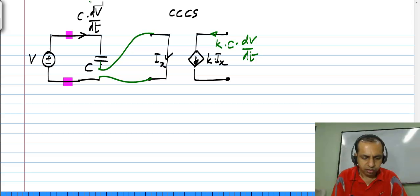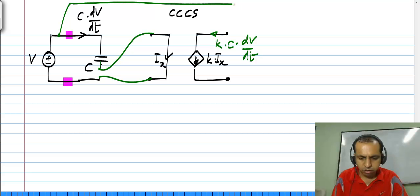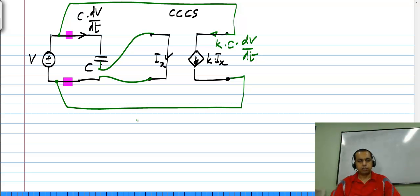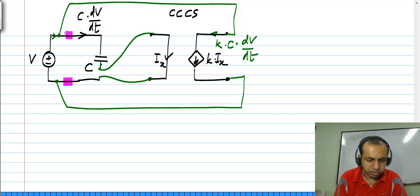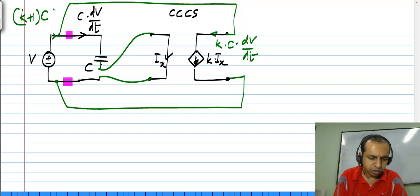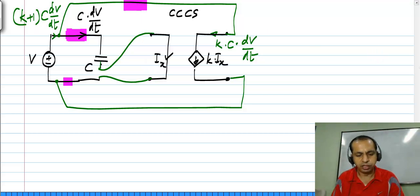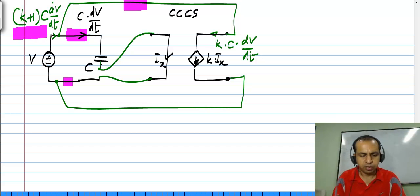Let me take the controlled current and also connect it across the voltage source which is driving the capacitor. Clearly you will see that the current drawn from the voltage source will be (K+1) times C times dV/dT. We have C·dV/dT in this wire and K·C·dV/dT in that wire, so the total current drawn is (K+1)·C times the time derivative of V.